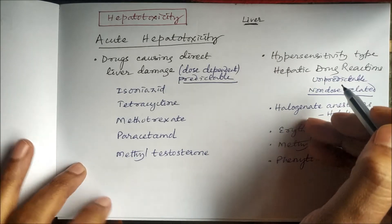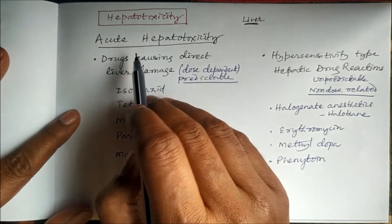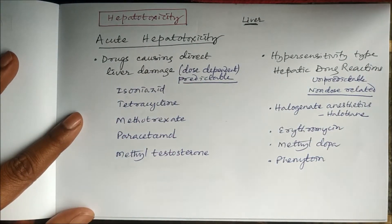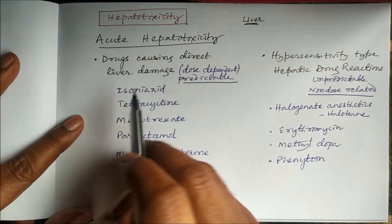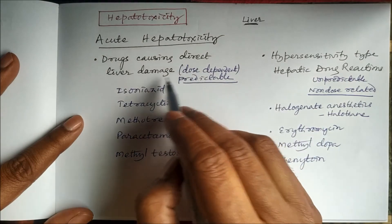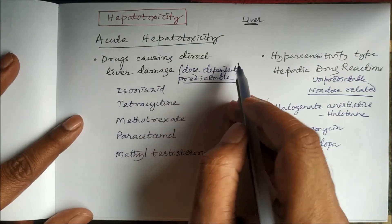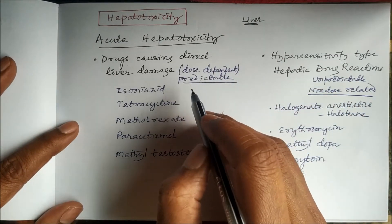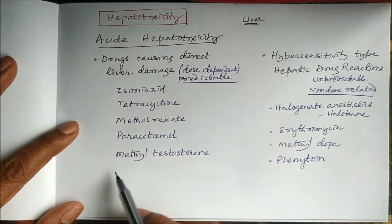Hepatotoxicity may be acute or chronic. Acute hepatotoxicity can be caused by drugs causing direct liver damage — those toxicities which are predictable, dose dependent.